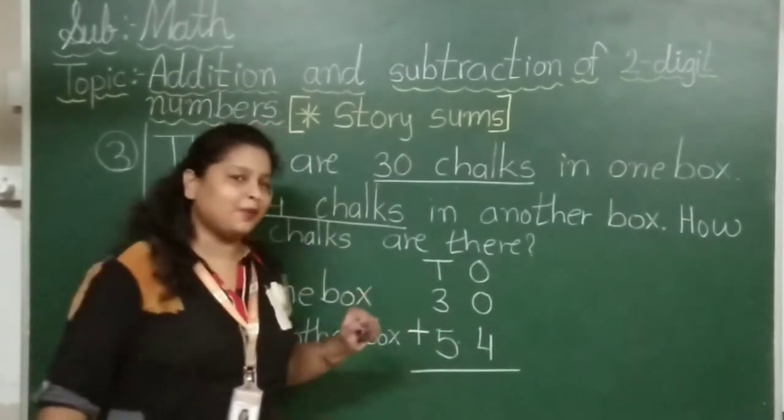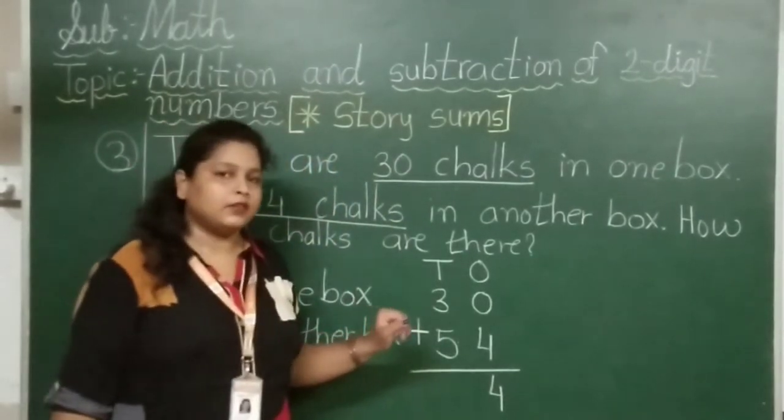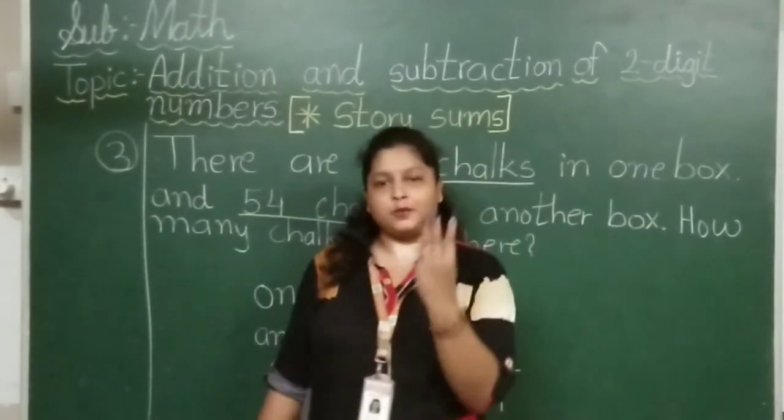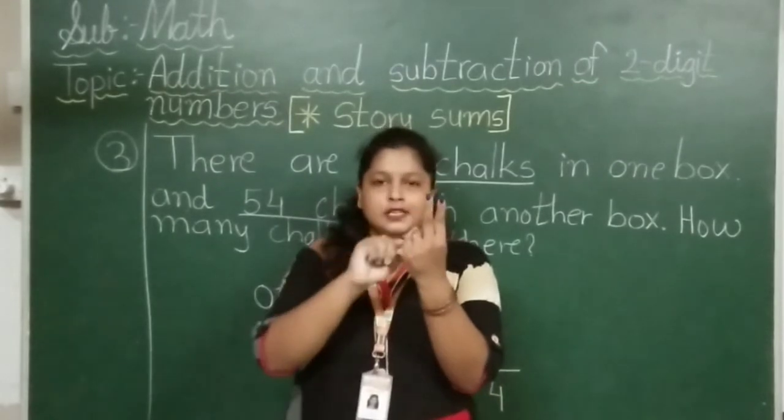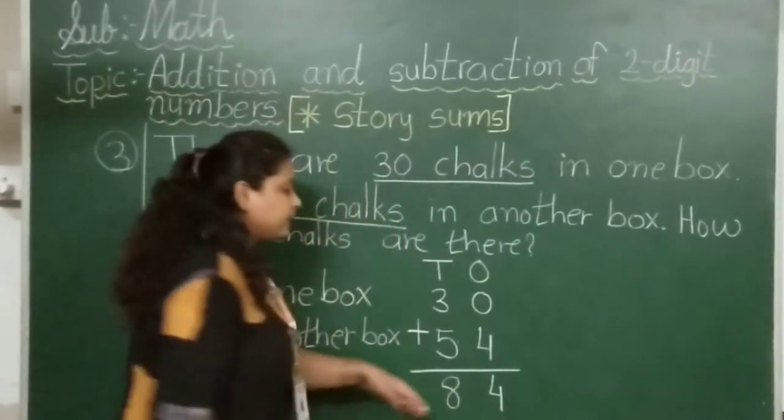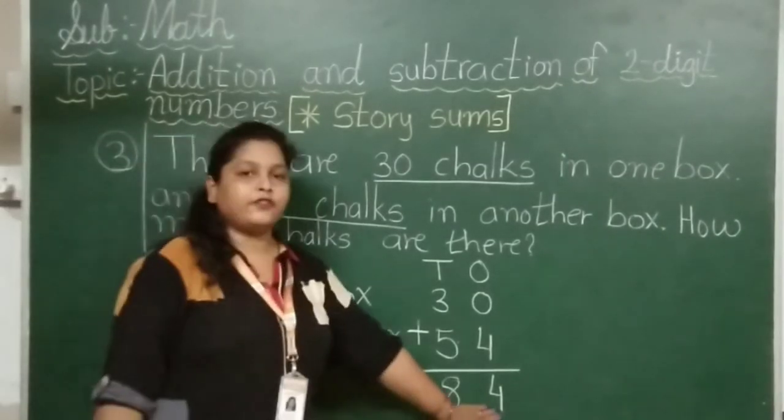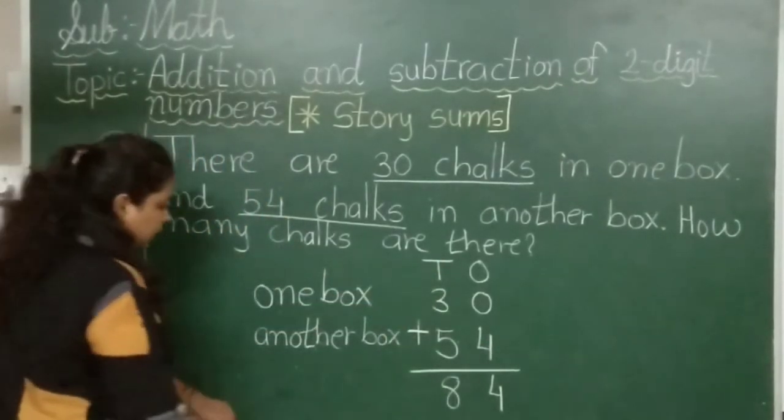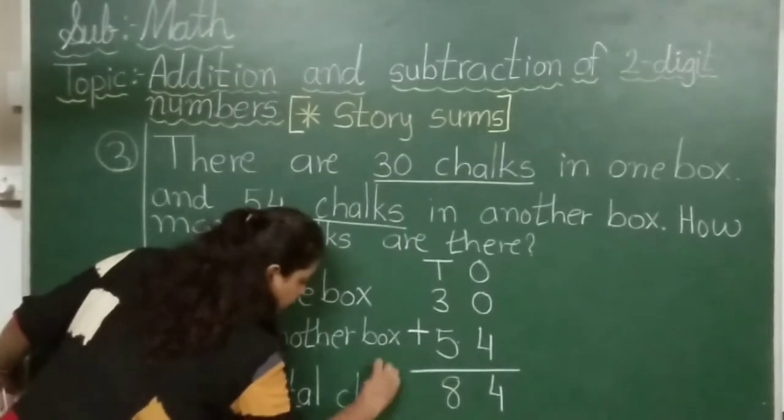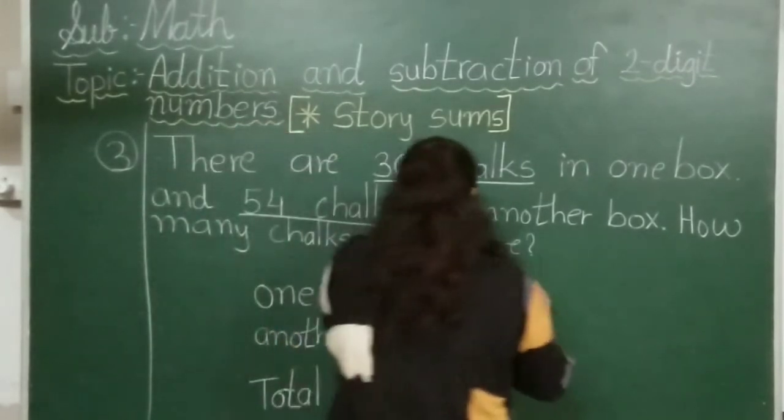0 plus 4 is equal to? Yes, same number: 4. 3 plus 5. 5 in your mind and 3 on your fingers. Count: 6, 7, 8. So write number 8 here. You will see total chalks: 8, 4: 84. So total chalks are 84.